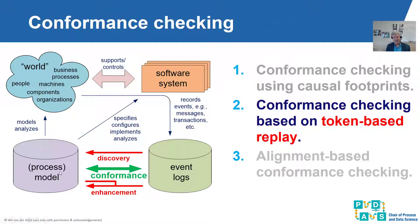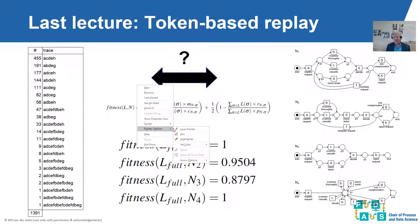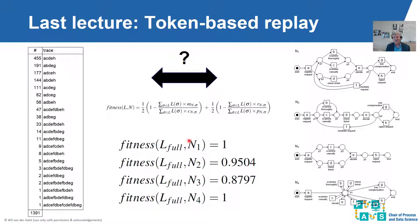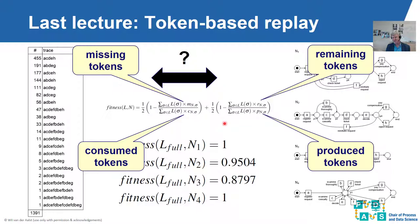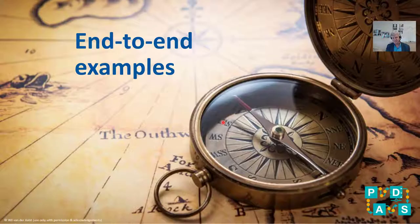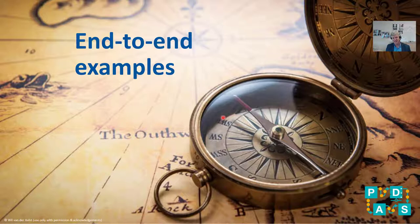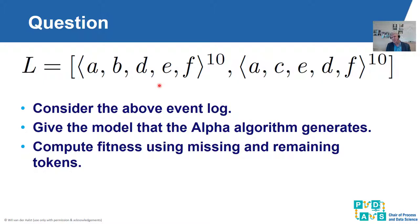We have a process model and event data that we want to compare. In token-based replay, we take an event log, take a model — here we have four examples — and compute fitness using the formula based on missing tokens, consumed tokens, remaining tokens, and produced tokens. I show end-to-end examples starting with an event log, discovering a model, then checking conformance. We use the alpha algorithm because its known problems let us verify that conformance checking can detect them.